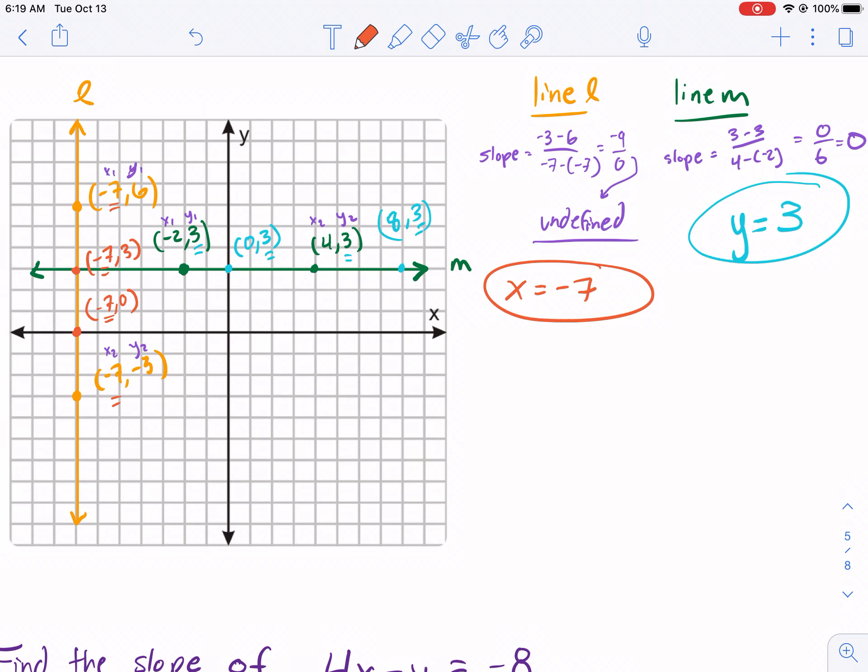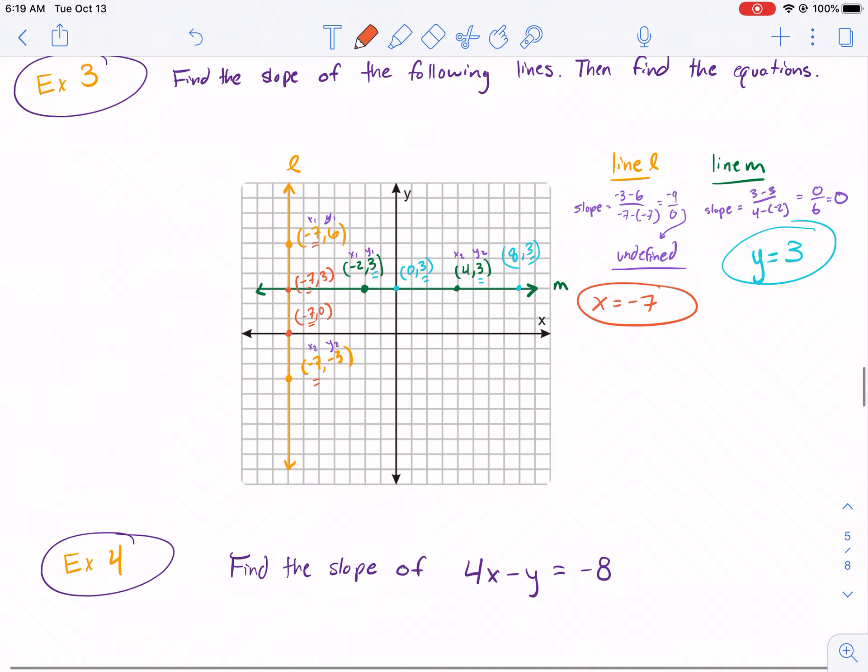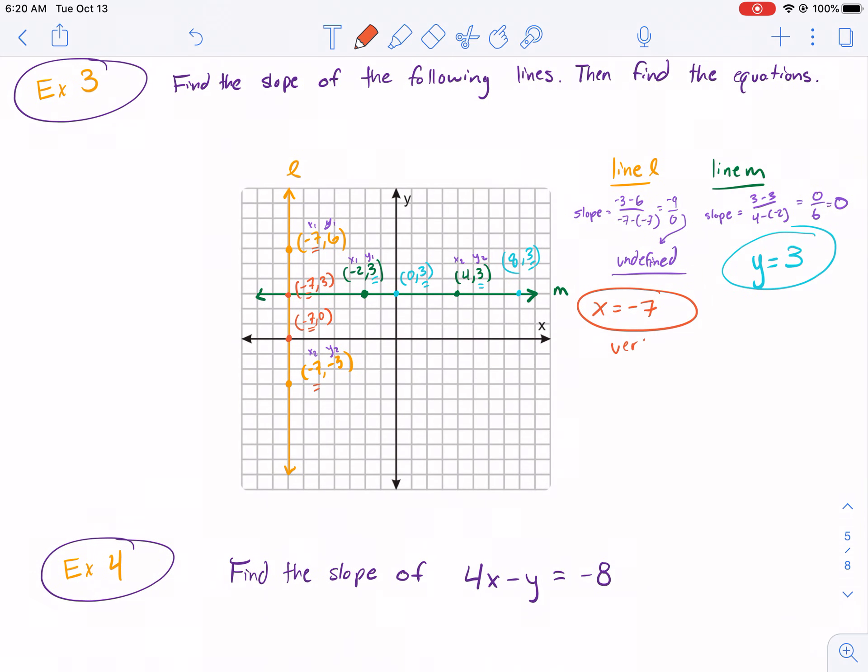So, the equation of a vertical line is going to be undefined slope. And it will be in the form of X equals a number. Where anytime we have a zero slope, it's a horizontal line. And it's always going to be the form of Y equals a number with a zero slope.